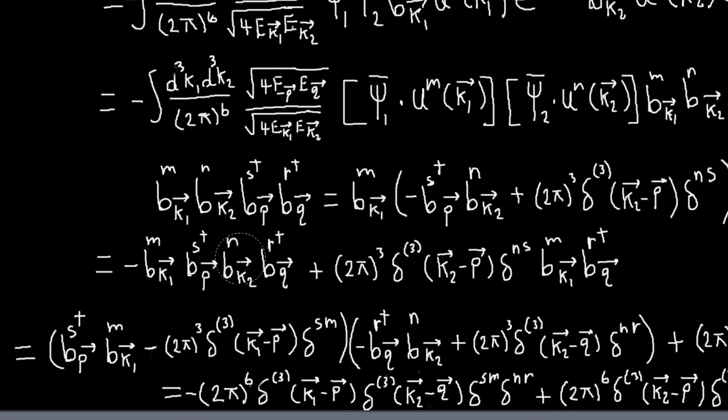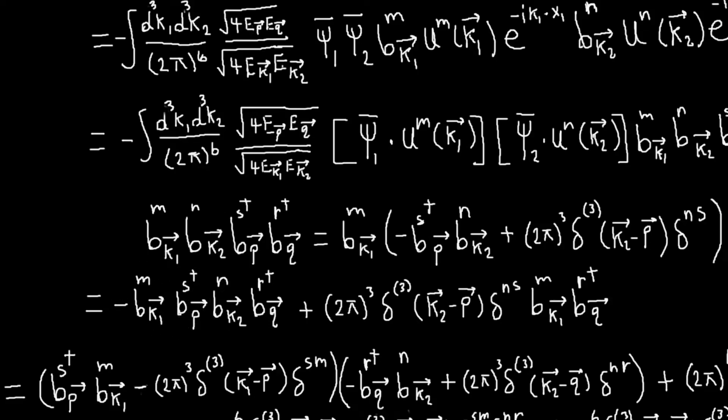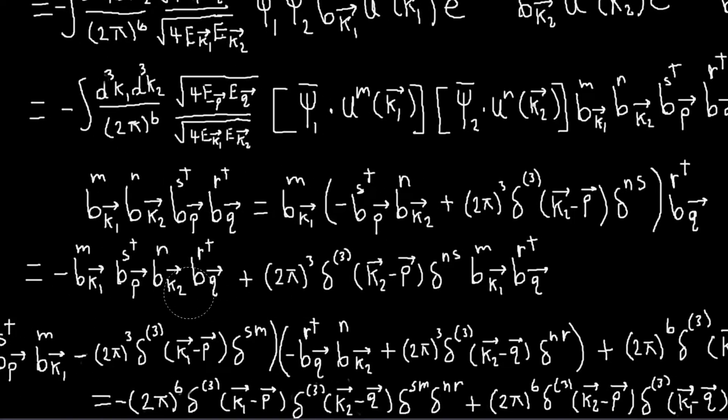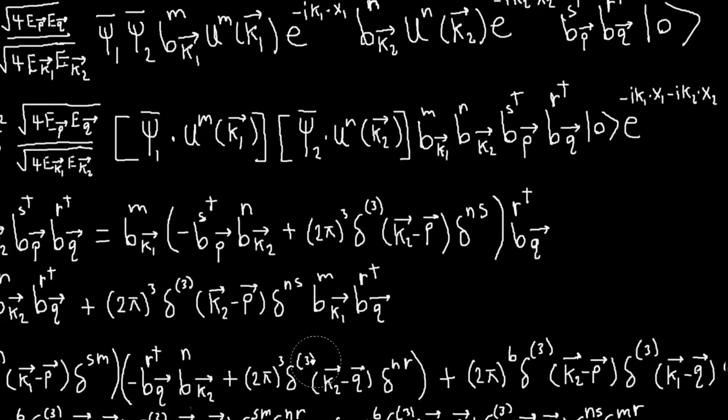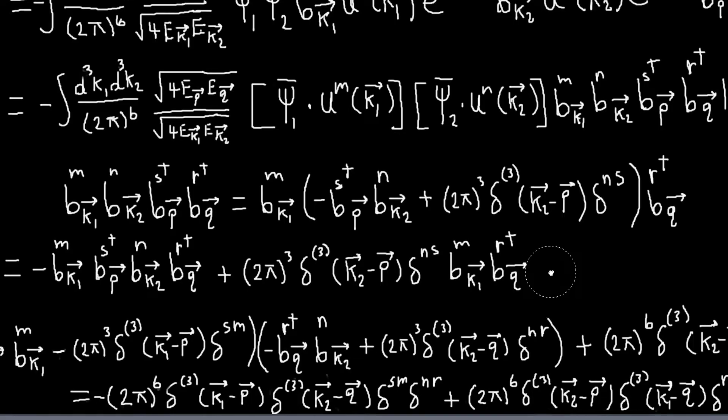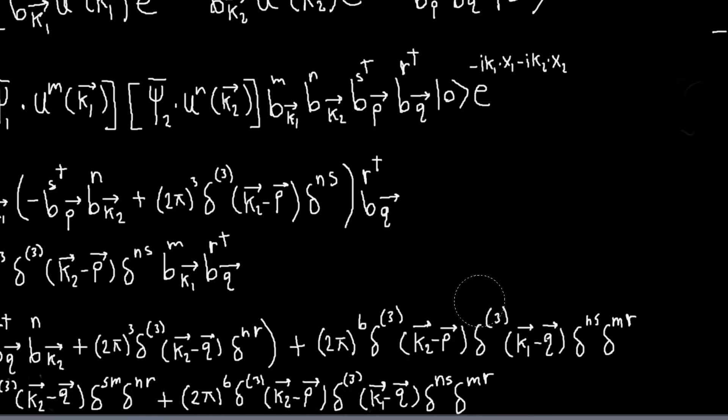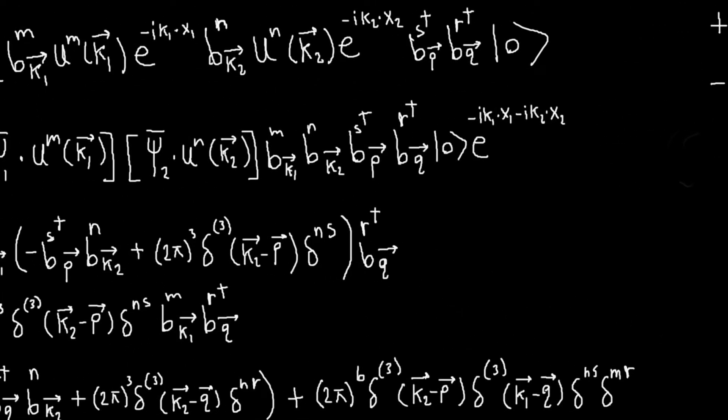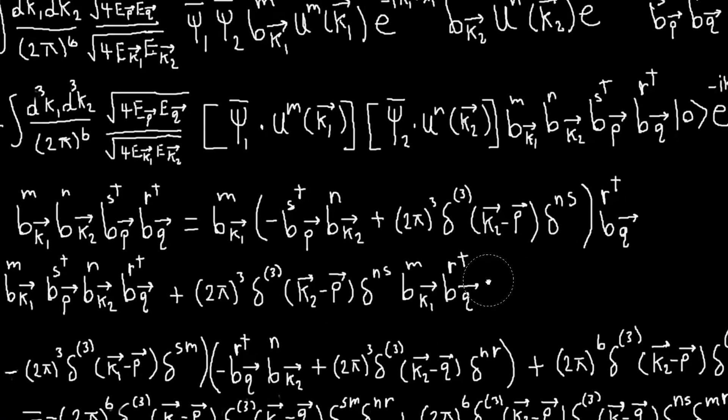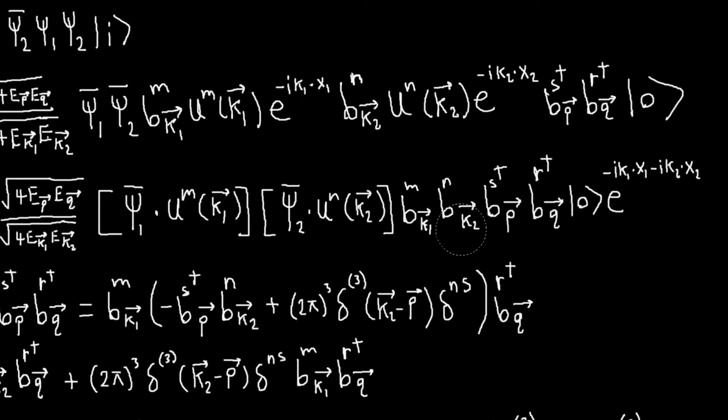And then in this term I will anti-commute, so basically what I do is I anti-commute bk1m bps dagger. And I anti-commute bk2n and bqr dagger. So that's why I have these two parentheses here. So basically these two things, when I do the anti-commutation relation, I get this. And then these two things, when I anti-commute them, I get this. So that's how I have this product here. And then I can, in this term, I can just anti-commute these two things. And one term I will have a lowering operator on the right, which will just annihilate my ground state. So I can throw that away. So the only term I'll have left over is the term involving the delta function.